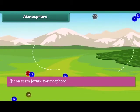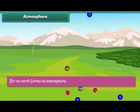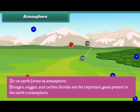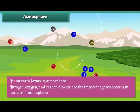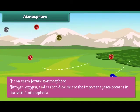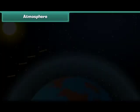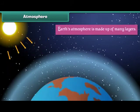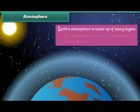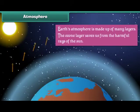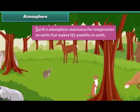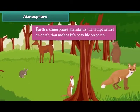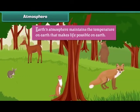Air on Earth forms its atmosphere. Nitrogen, oxygen and carbon dioxide are the important gases present in the Earth's atmosphere. Earth's atmosphere is made up of many layers. The ozone layer saves us from the harmful rays of the Sun. Earth's atmosphere maintains the temperature on Earth that makes life possible.